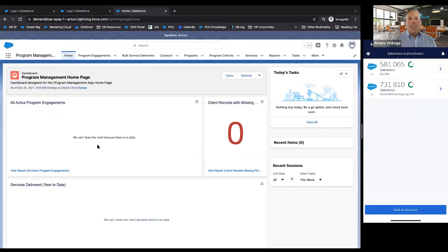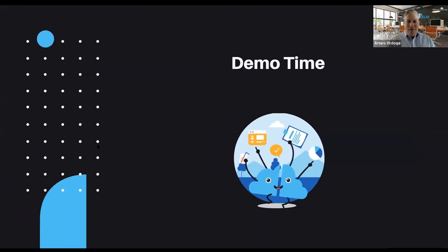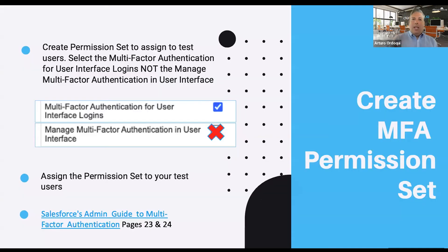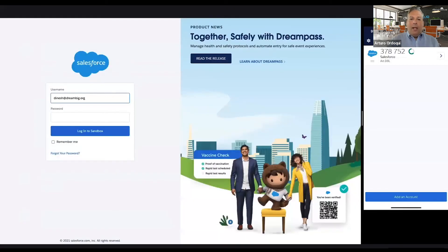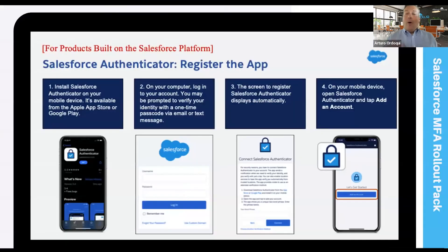And there we have it — we've now shown you how to create the permission set and just how easy it is to set up the Authenticator app and connect it to your Salesforce login. The demo went very well. When you receive the slide deck, the process we just walked through is included as a reference, as well as a quick guide to resources such as the Salesforce Admin Guide to Multi-Factor Authentication — pages 23 and 24 cover the permission set — and a short video walkthrough. The Salesforce MFA Rollout Pack also has sample slides you can edit and customize for your organization.